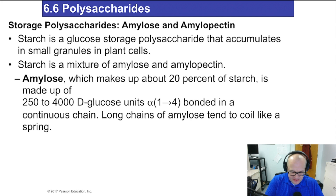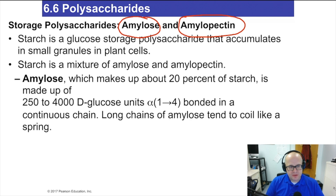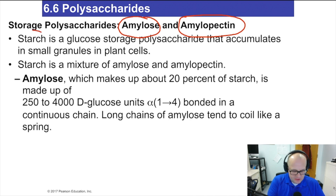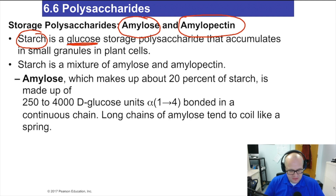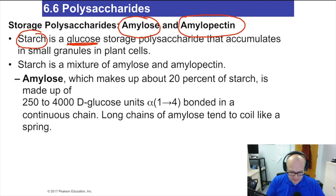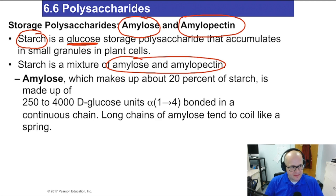The first things you need to learn about polysaccharides are amylose and amylopectin — write those words down. Amylose and amylopectin are storage molecules for glucose. We commonly refer to them as starch, and all it is is a bunch of glucose molecules bonded together. Starch is a mixture of both amylose and amylopectin.